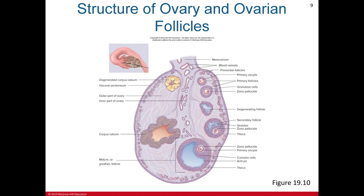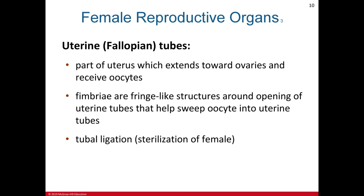After ovulation, the remaining cells of the ruptured follicle are transformed into a glandular structure called the corpus luteum. If pregnancy occurs, the corpus luteum enlarges in response to a hormone secreted by the placenta called human chorionic gonadotropin (hCG). If pregnancy does not occur, the corpus luteum lasts 10 to 12 days and then begins to degenerate.